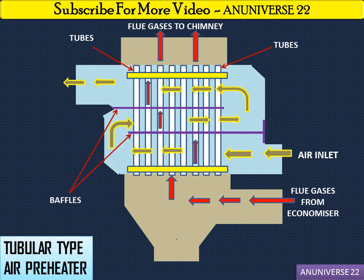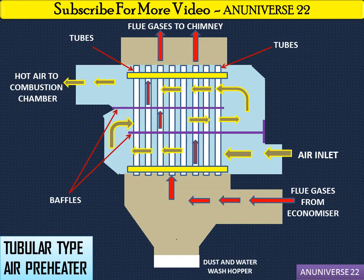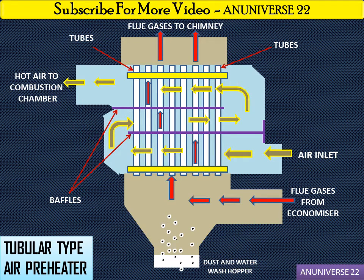The flue gases give their heat to the air inlet — that is, the cold air that enters from the right side — and this hot air is then delivered to the combustion chamber. This is the dust and water wash hopper. The soot and other material carried with the gases are collected in the hopper at the bottom and removed periodically through the soot gate.